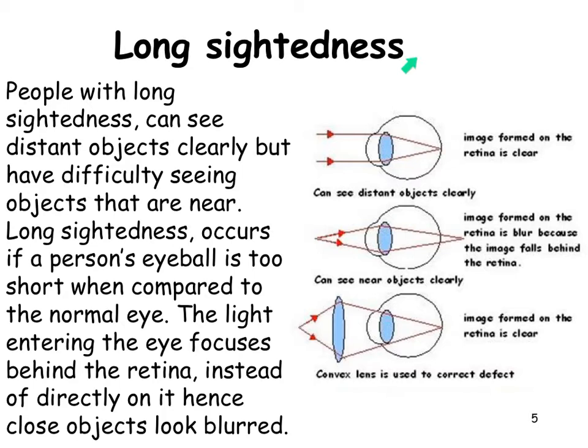Problems with the eyes include long-sightedness, short-sightedness, and astigmatism. People with long-sightedness can see distant objects but have difficulty seeing things close by. Long-sightedness occurs when a person's eyeball is too short, and light gets focused behind the retina instead of on it.